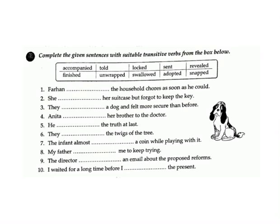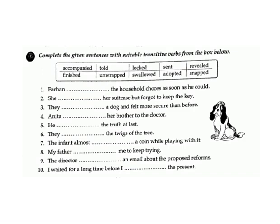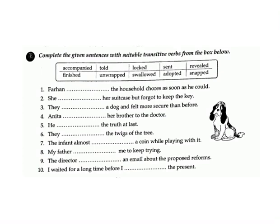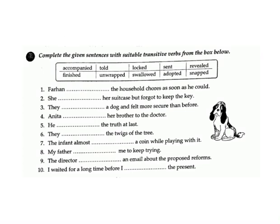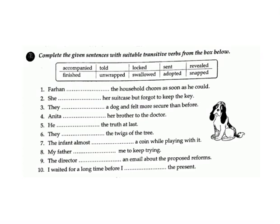2. She dashed her suitcase but forgot to keep the key. Answer: locked. 3. They dashed a dog and felt more secure than before. Answer: adopted. 4. Anita dashed her brother to the doctor. Answer: accompanied. 5. He dashed the truth at last. Answer: revealed. 6. They dashed the twigs of the tree. Answer: snapped.